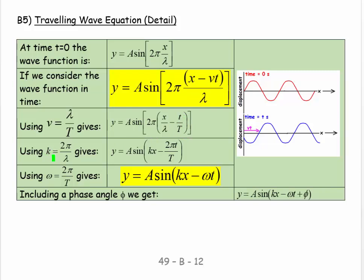And if we substitute in for our angular wave number, we get k equals 2π over λ, which equals A sine kx minus 2π times the time over the period.